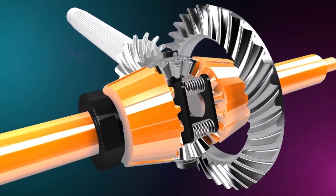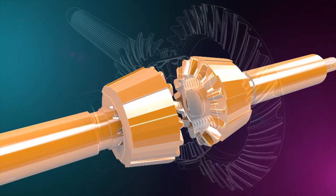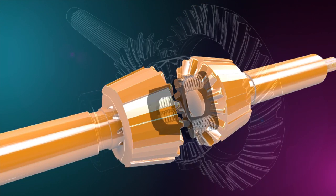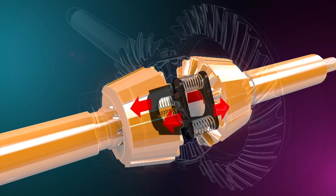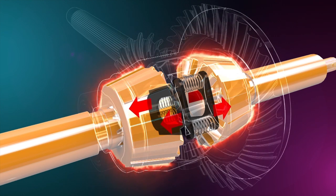The cones and the side gears of the differential are both splined to the axle shafts. Coil springs are used to push the cones against the differential case to provide the friction contact.